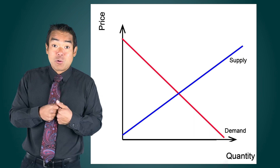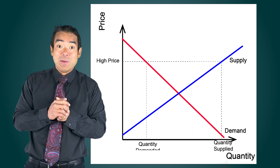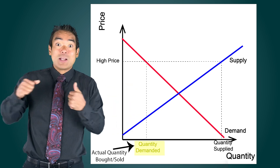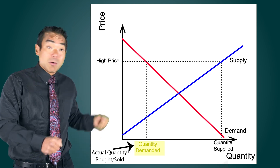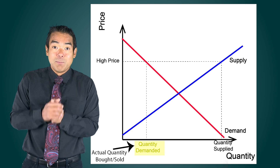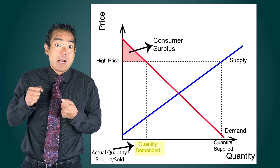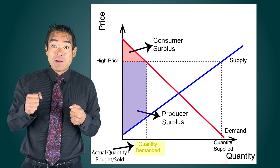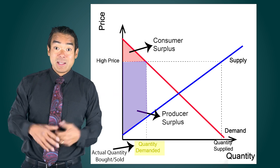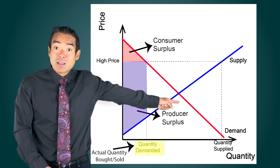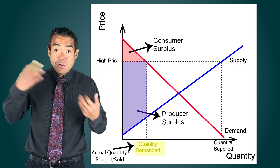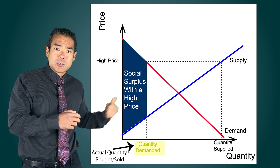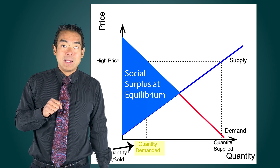If market price is above equilibrium price, then quantity supplied exceeds quantity demanded, but the limiting factor is quantity demanded — it doesn't matter how much businesses want to sell, all that matters is how much people are willing to buy, because producers don't get surplus from something they can't sell. Consumer surplus is the area above price and below demand to the left of what consumers actually buy, and producer surplus is the area above supply and below price to the left of the quantity they can actually sell. Adding these together gives social surplus, which is clearly less than it would be at equilibrium.